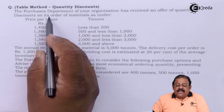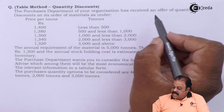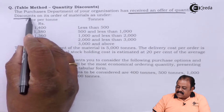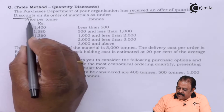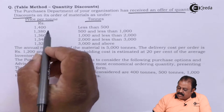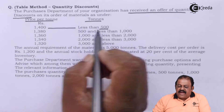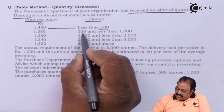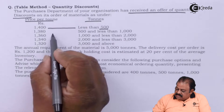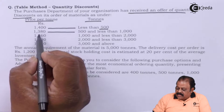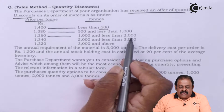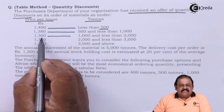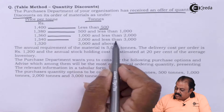Let us read the question. The purchases department of your organization has received an offer of quantity discount on its order of material. Price per ton: 1400 if order is less than 500 tons; 1380 per ton if order is between 500 but less than 1000 tons; 1360 per ton if order size is 1000 but less than 2000 tons.